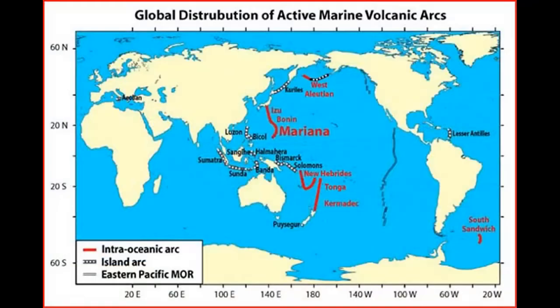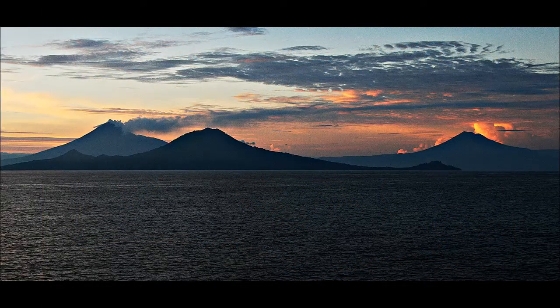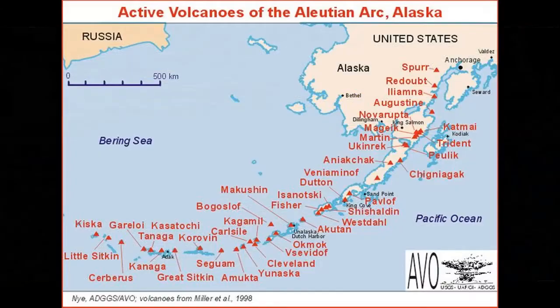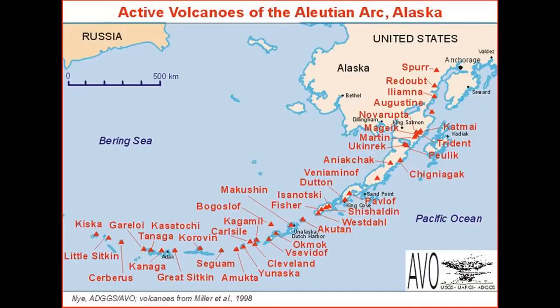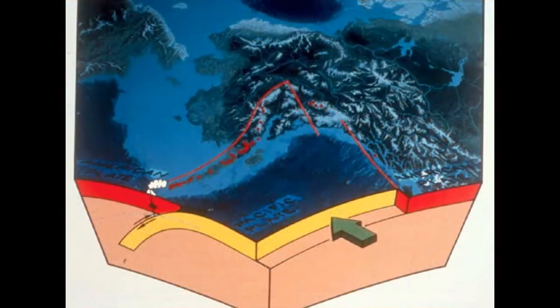Although all subduction zones exhibit these features, a great deal of variation exists along the length of an individual subduction zone, as well as among different subduction zones. Subduction zones can also be placed into one of two categories: those in which oceanic lithosphere is subducted beneath another oceanic slab, and those in which oceanic lithosphere descends beneath a continental block. An exception is the Aleutian subduction zone, where the western part is an oceanic-oceanic subduction zone, while subduction along the eastern section occurs under the Alaskan mainland continental block.